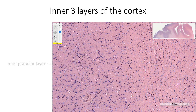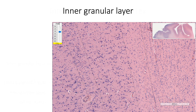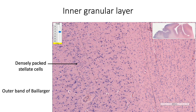The inner three layers of cortex include the inner granular layer, inner pyramidal layer, and pleomorphic layer, and innermost to these layers of cortex we find the white matter. The inner granular layer consists of densely packed stellate cells, along with the outer band of Baillarger.